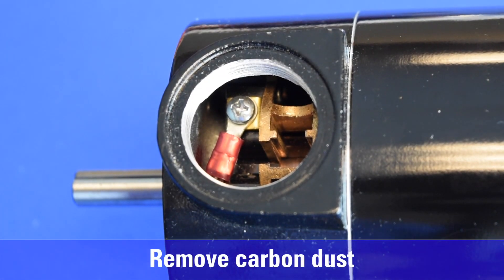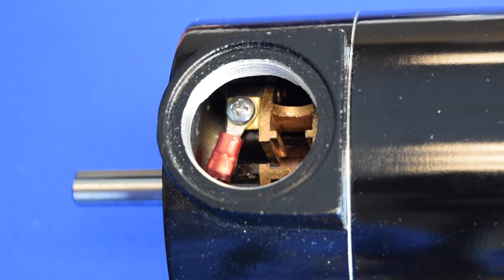As brushes wear, carbon dust will accumulate inside the motor end shield over time and should be removed periodically. With both brush caps and brushes removed, carefully use a shop vacuum with a small nozzle to vacuum out possible brush dust deposits through each of the open brush cap holes. We advise against blowing compressed air into the motor.